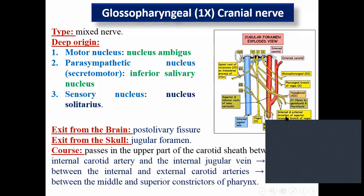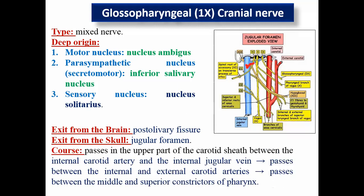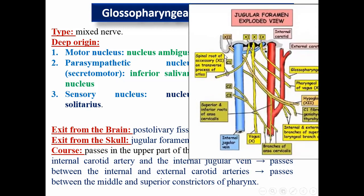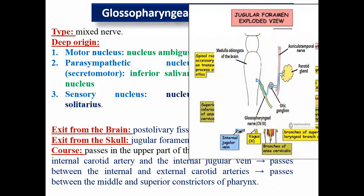The nerve descends between the internal jugular vein and internal carotid artery, then passes between the internal and external carotid to reach the tongue and pharynx. This is the course of the glossopharyngeal nerve. It supplies the parotid gland via the otic ganglion.